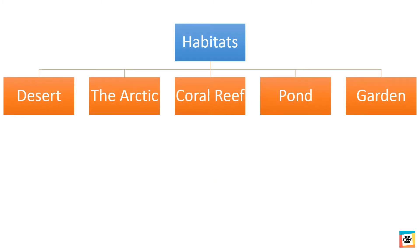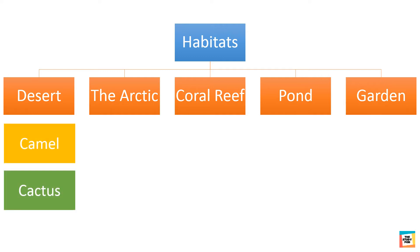Our world is full of habitats. Each habitat has its own flora and fauna. For example, we can find cactus and camel in the desert. They are the flora and fauna of the desert.